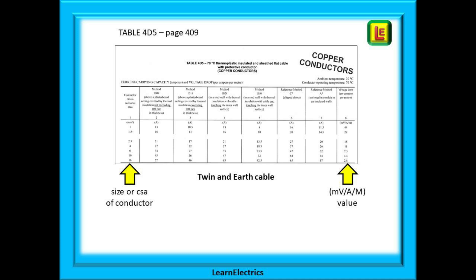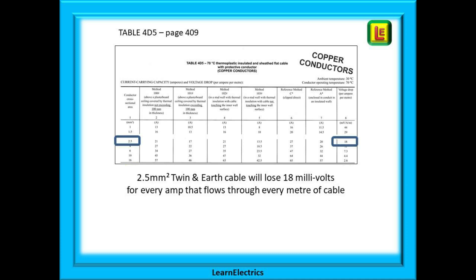Turn to page 409 in the wiring regulations and we will find table 4D5. The leftmost column lists the size or CSA of the conductors, and the rightmost column lists the mV/A/m number for each conductor size. Find 2.5 millimeter conductor size in the leftmost column and then trace along the row to the far right column where we will find the number 18 in this case. This is the mV/A/m number for 2.5 millimeter twin and earth cable. This size cable, 2.5 millimeters, will lose 18 millivolts into the cable for every amp of current that flows and for every meter length of the cable.